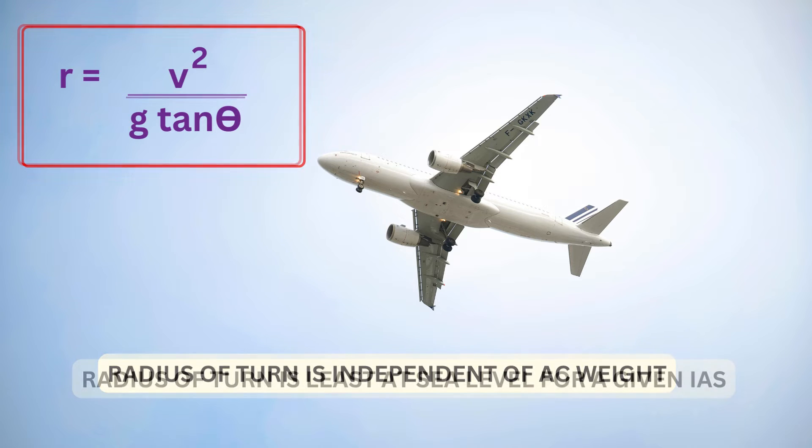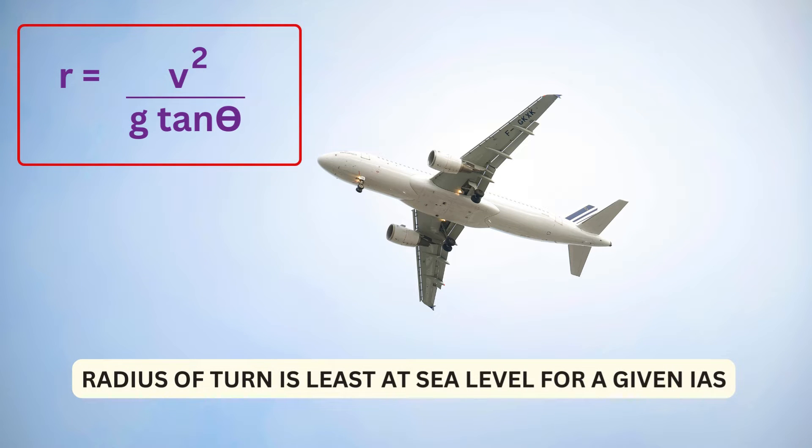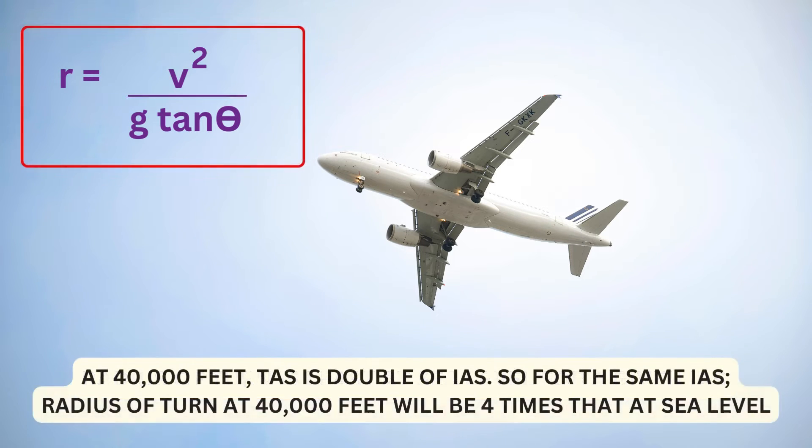Radius of turn is least at sea level for a given indicated airspeed. Since as you go high, the value of v which is TAS keeps increasing for the same indicated airspeed. At 40,000 feet TAS is double of IAS. So for the same IAS, radius of turn at 40,000 feet will be 4 times of that at sea level.